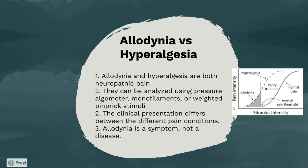Allodynia and hyperalgesia are both neuropathic pain conditions. They can be analyzed using pressure algometers, monofilaments, or weighted pinprick stimuli, but the clinical presentation differs. Allodynia is when a small sensation can cause pain, whereas hyperalgesia is when pain is extended or exaggerated. Allodynia is a symptom, not a disease. The image on the right shows the relationship between stimulus intensity and pain intensity. Allodynia comes before the injury, while hyperalgesia comes after.